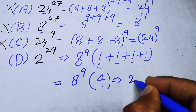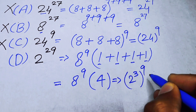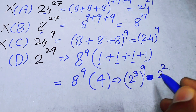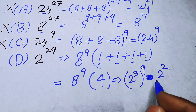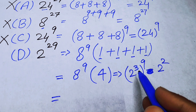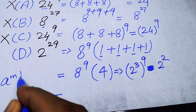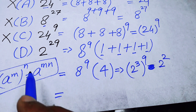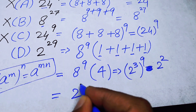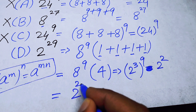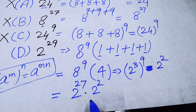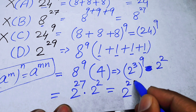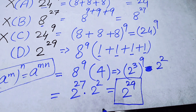We write 8 as 2 to the power of 3, so we have (2^3)^9 multiplied by 4, which is 2^2. Applying the exponent law — (a^m)^n equals a^(m×n) — we get 2^(3×9) times 2^2, which is 2^27 times 2^2. Adding the powers gives 2 to the power of 29.